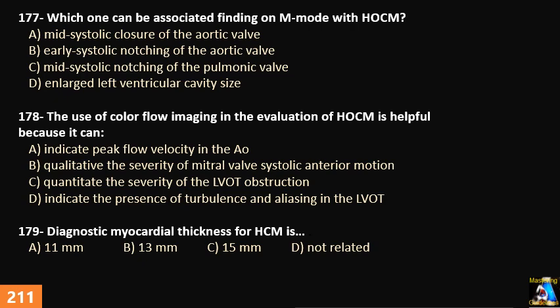Question 179: The diagnostic myocardial wall thickness criterion for hypertrophic cardiomyopathy is: A) 11 mm, B) 13 mm, C) 15 mm, or D) non-related?